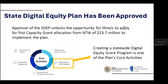Our state digital equity plan has been approved — feel free to read about our strategies and planned work to improve digital equity and inclusion in Illinois. The plan's approval unlocks the opportunity for Illinois to apply for the capacity grant allocation. The first allocation from NTIA is $23.7 million to implement the plan. We have five different core activities in the state digital equity plan, and the statewide digital equity grant program is one of those five. We are currently in the process of creating that statewide digital equity grant program.